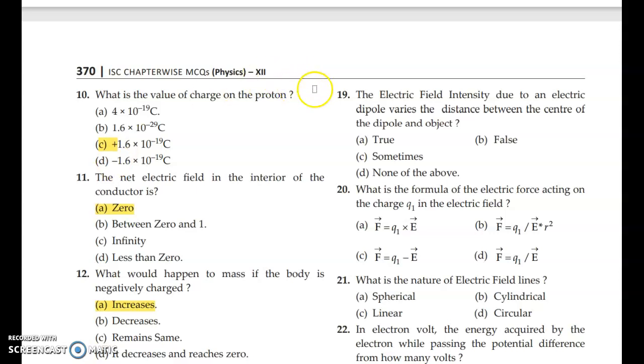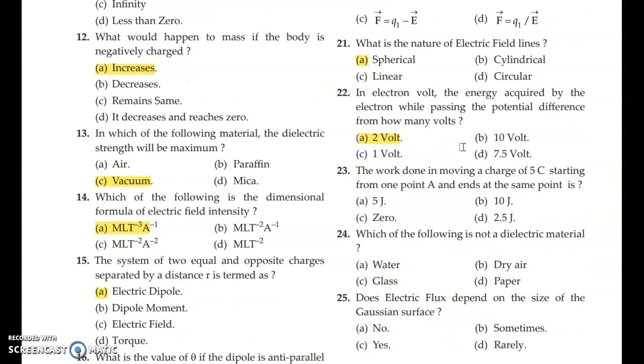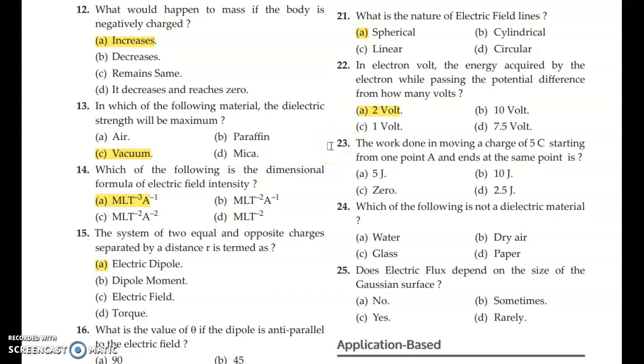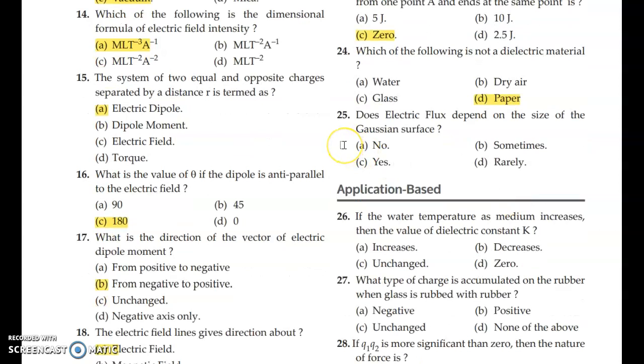Question 19: The electric field intensity due to an electric dipole varies with the distance between the center of the dipole and object. What is the formula of the electric force acting on charge Q1 in the electric field? Answer is option A. Question 23: The work done in moving a charge of 5 coulombs starting from point A and ending at the same point is zero, since there is no displacement. Which of the following is not a dielectric material? Answer is paper. Does electric flux depend on the size of gaussian surface? Answer is no. Electric flux only depends upon the amount of charge enclosed.